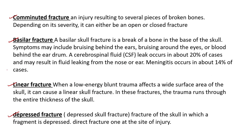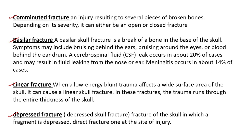Basilar fractures occur downward — the occipital bone fractures, and fractures occur near the ear. This is a basilar fracture. Comminuted fractures depend on the injury — when any bone breaks into multiple pieces, two or more pieces of bone, that is a comminuted fracture.